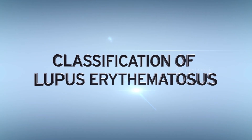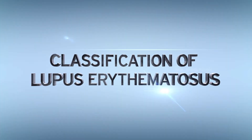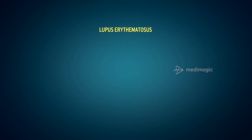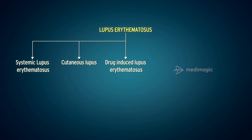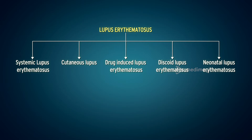Lupus erythematosus is classified based on its mode and site of manifestation into five categories: systemic lupus erythematosus, cutaneous lupus, drug-induced lupus erythematosus, discoid lupus erythematosus, and neonatal lupus erythematosus.